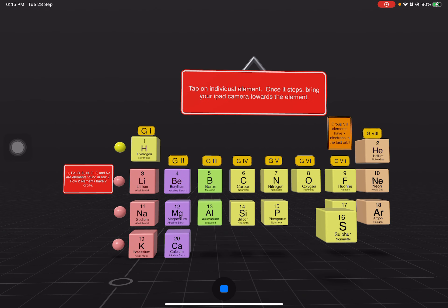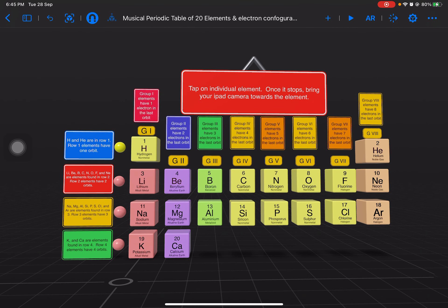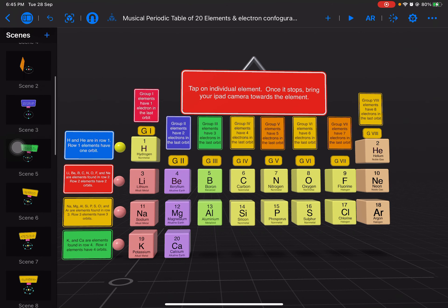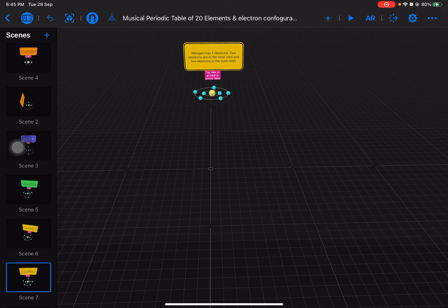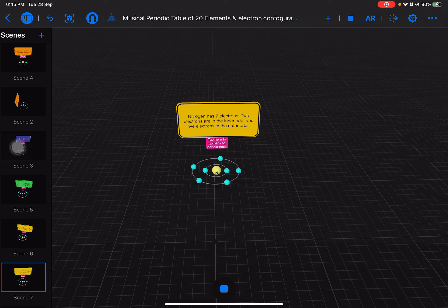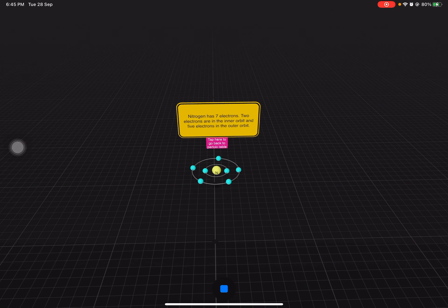And then if we go to sulfur or any of the electron configuration, let's say this one here, you can see that this is the electron configuration of nitrogen. Nitrogen has seven electrons. Two electrons are in the inner orbit and five electrons in the outer orbit.